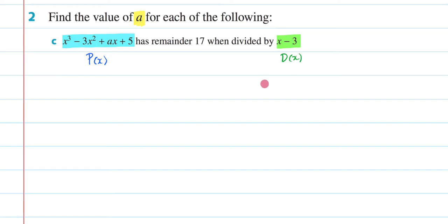Now we're using our remainder theorem to find out what this missing a is going to be. Now we know that our remainder is going to be 17, so that's going to be helpful. So let's just begin.